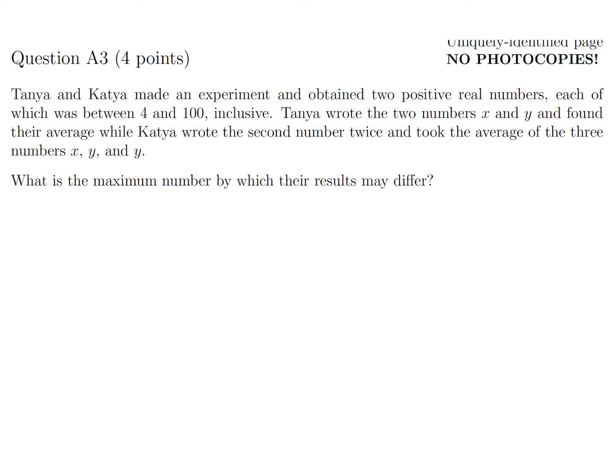Tanya and Katya made an experiment and obtained two positive real numbers, each of which was between 4 and 100 inclusive.